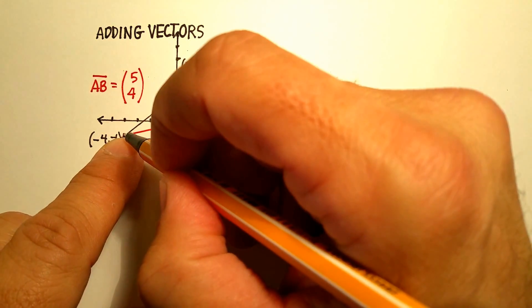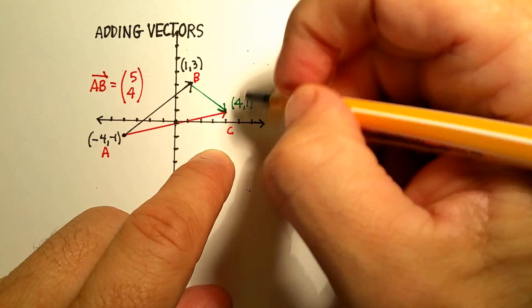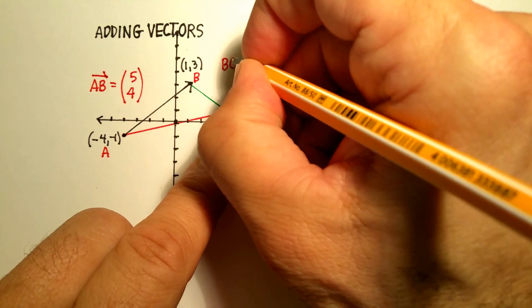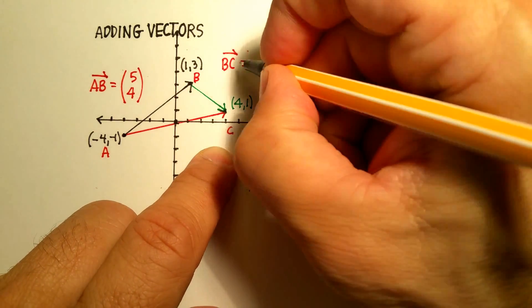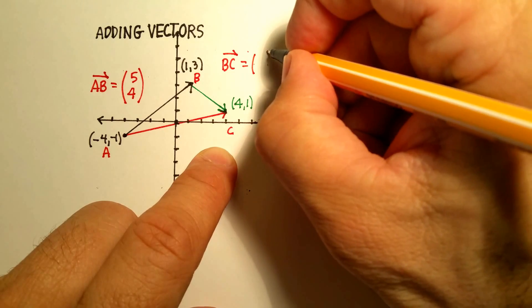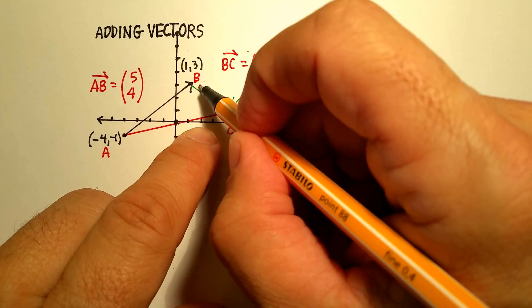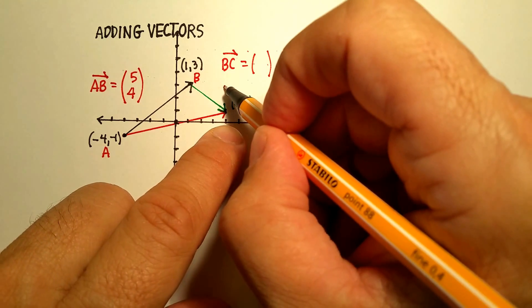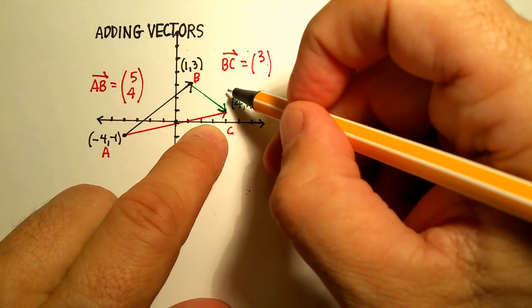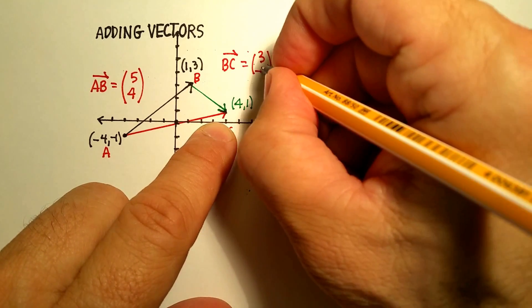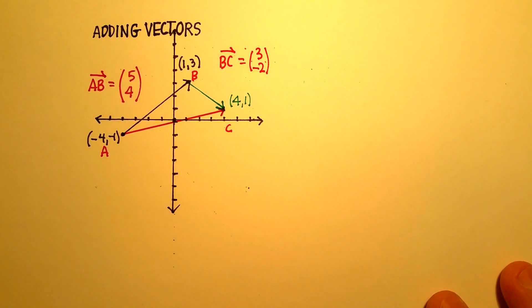Now, I'm actually going to add vector A, B. Sorry, there we go. To vector B, C. Now, in order to do that, we also need to know what the vector is for B, C. And do the exact same thing. Its horizontal movement would be 1, 2, 3. And it looks like its vertical movement is 1, 2 in the negative direction. So a negative 1, 2.